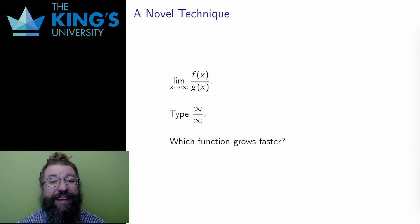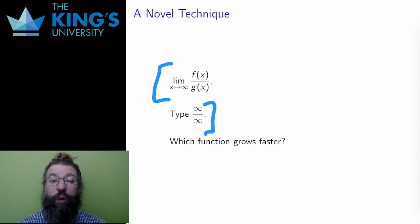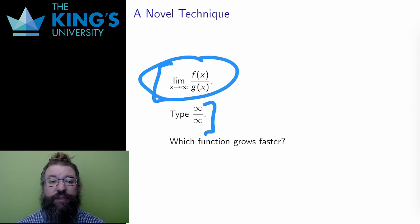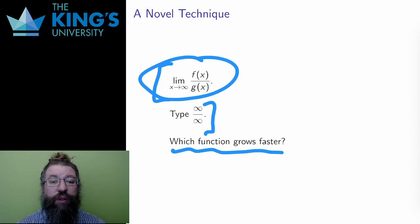Let me finally introduce the idea of this video. Take a limit as x gets larger and larger without bound of the ratio of functions. Assume this is of type infinity over infinity — that is, both f and g grow without bound. The ratio is asking what happens with f and g relative to each other; that is, which function grows faster? To understand this limit, I need to understand the relative speed of growth of the two functions.